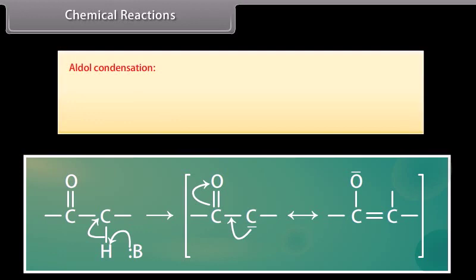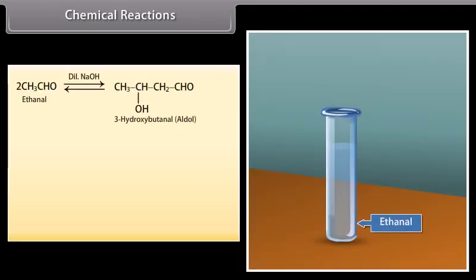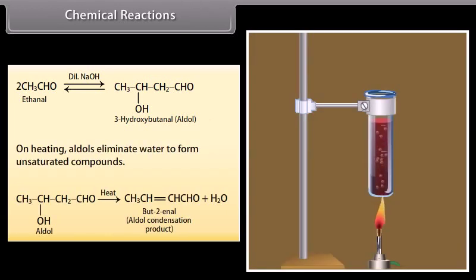Aldol condensation: it is the dimerization of an aldehyde or ketone having at least one alpha hydrogen in the presence of dilute alkali such as dilute sodium hydroxide, sodium carbonate, etc., as catalyst to give a hydroxy aldehyde or ketone called aldol. Ethanal in the presence of dilute sodium hydroxide undergoes condensation to form a syrupy liquid known as aldol. On heating, aldols eliminate water to form unsaturated compounds.